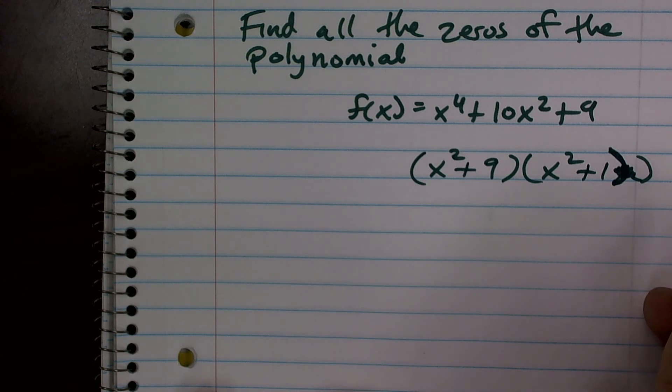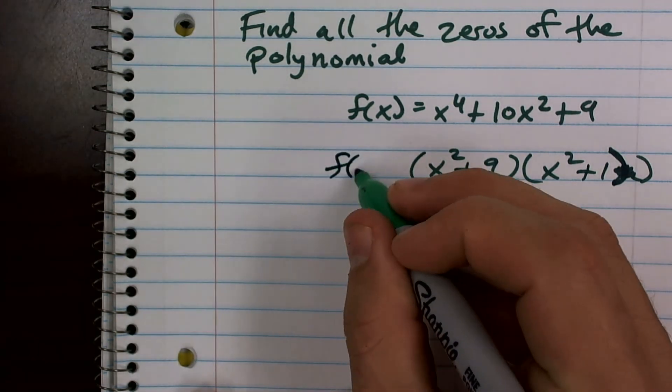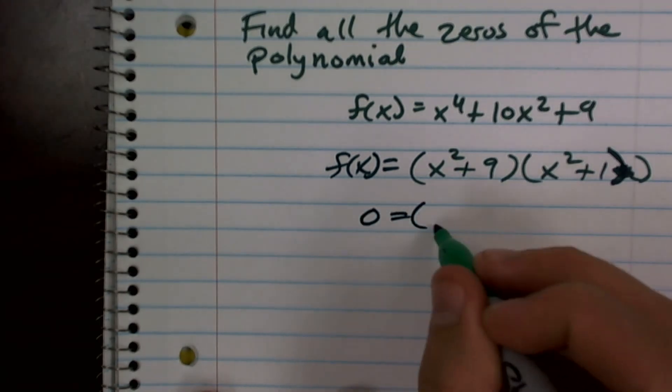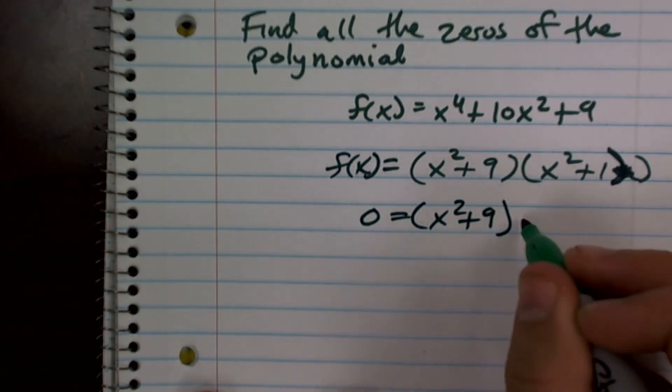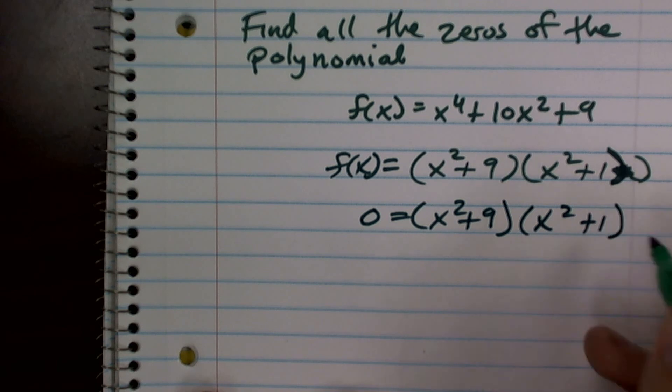So it says find the zeros of the polynomial function. So if f of x equals there, to find the zeros, we're going to set this equal to zero. x squared plus nine times x squared plus one equals zero.